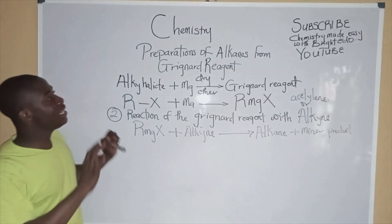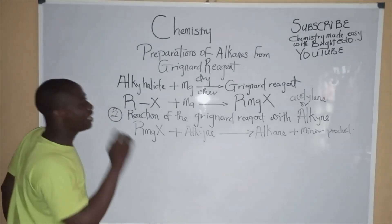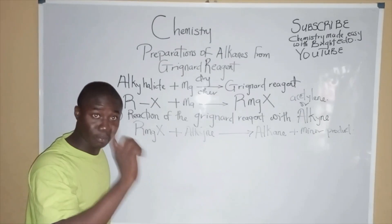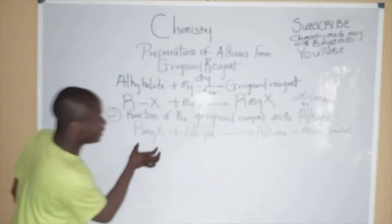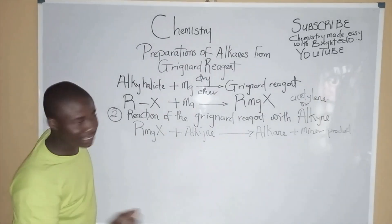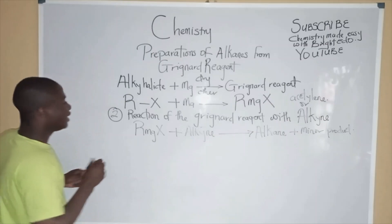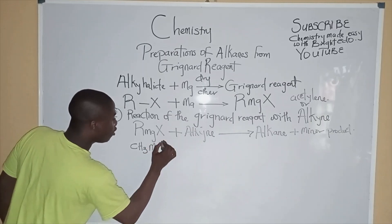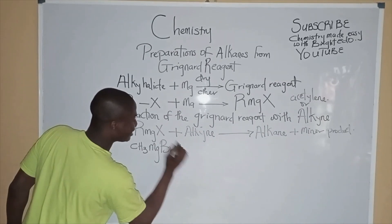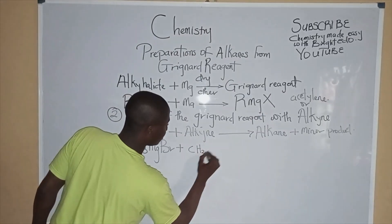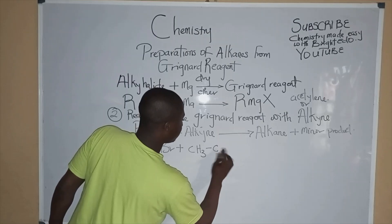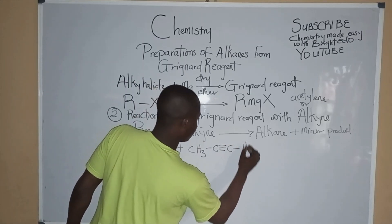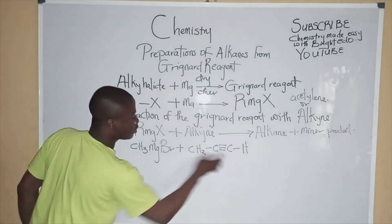For the preparation of alkanes from the Grignard Reagent, we remove one hydrogen atom from the compound the Grignard Reagent is reacting with. For example, using CH3MgBr reacting with an alkyne like propyne: CH3-C≡C-H.